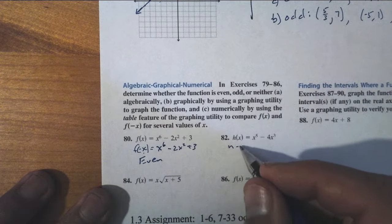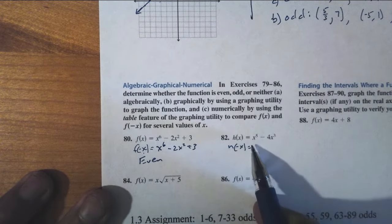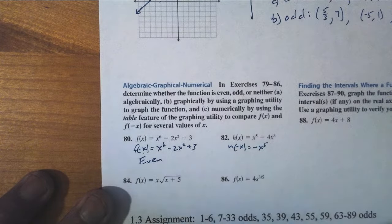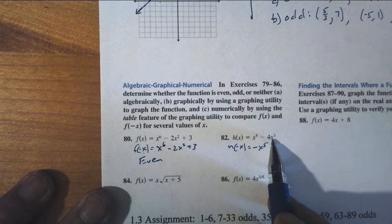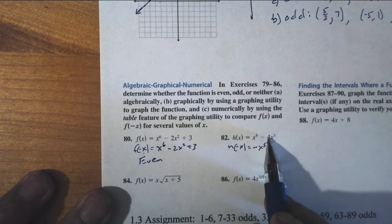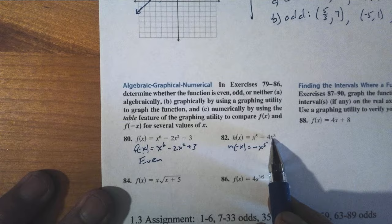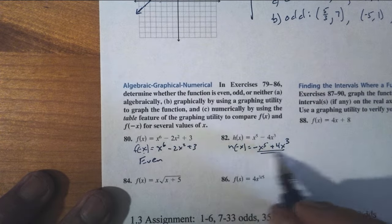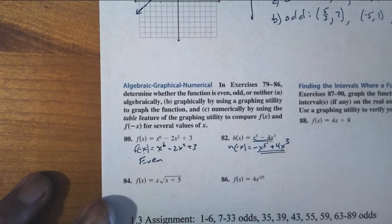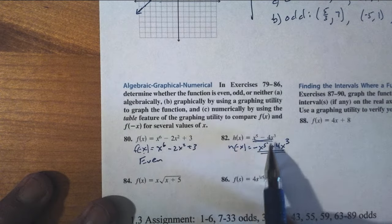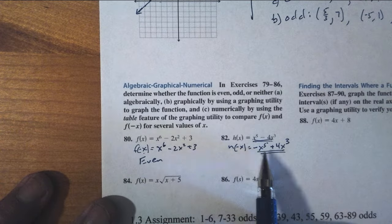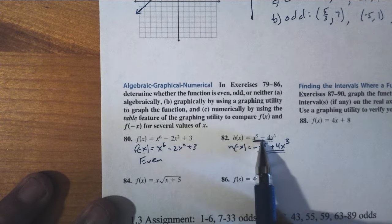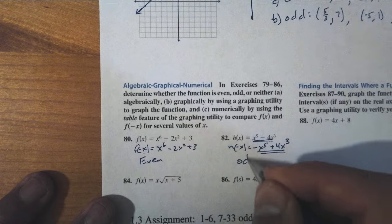For h(negative x), with h(x) equals x to the fifth minus 4x cubed: negative x to the fifth — the negative survives — and negative x to the third also survives, giving negative 4 times negative x cubed, which is plus 4x cubed. This is exactly the opposite of the original function. If you multiply the original by negative 1 you'd get this, so the height to the left is the opposite of the height to the right. This one is odd.